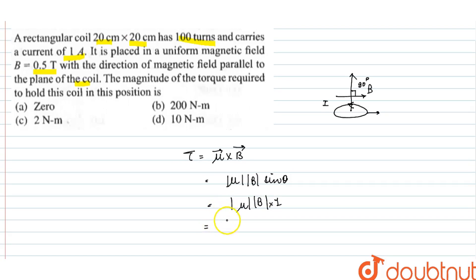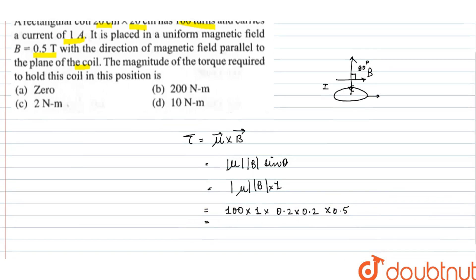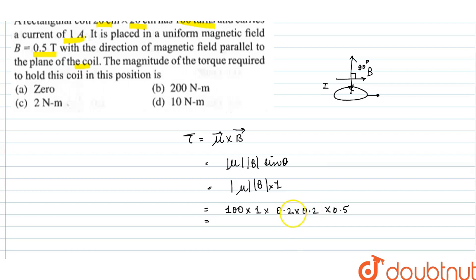The magnetic moment μ is current into area, multiplied by the number of turns. So μ = N × I × A = 100 × 1 × (0.2 × 0.2). Then torque = μ × B = 100 × 1 × 0.04 × 0.5, which equals 2 Newton meter.